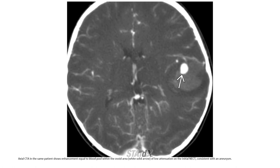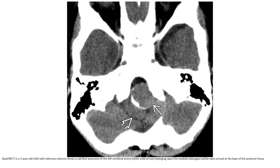CTA in the same patient shows enhancement equal to blood flow within the ovoid area of low attenuation seen on the initial non-contrast enhanced CT, consistent with an aneurysm.